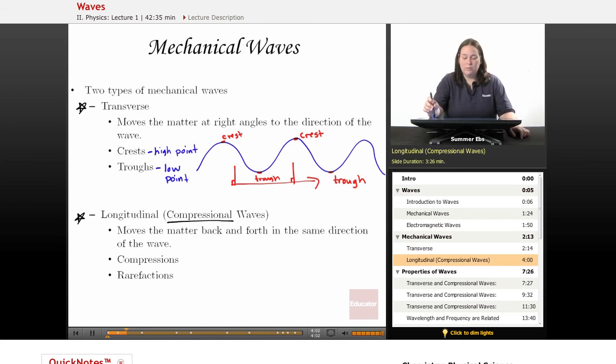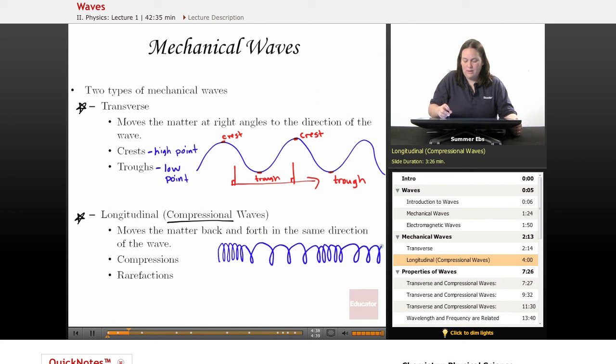A longitudinal wave or compressional wave moves the matter back and forth in the same direction as the wave. It's easiest to draw a compressional wave looking like a slinky. It's kind of wide, then spreads out a little, then tight together again, then spreads out.